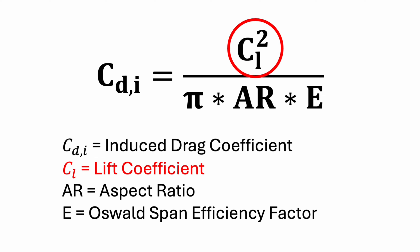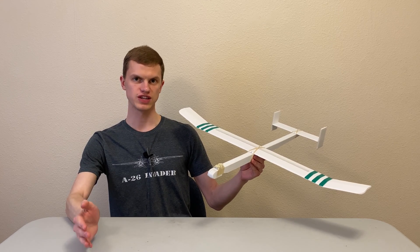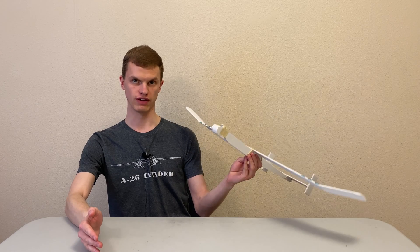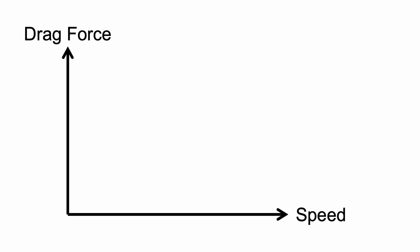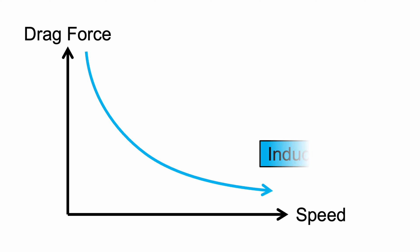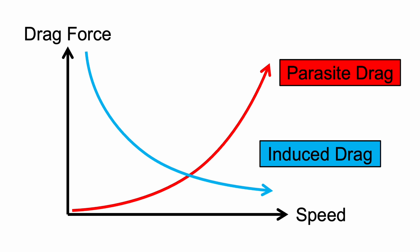The first thing we'll notice is that the induced drag coefficient is smaller when the lift coefficient decreases. As you fly slower, you have to increase your lift coefficient to stay airborne, which means the induced drag force on your plane decreases as you fly faster and increases when you fly slower. In contrast, as we learned in our video about parasite drag, the parasite drag force increases as you fly faster and decreases as you fly slower.